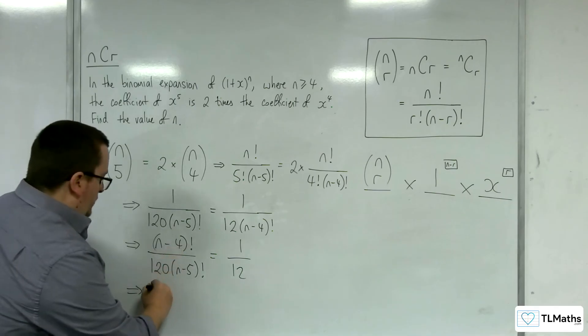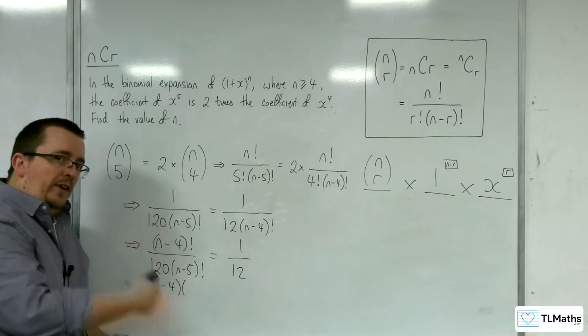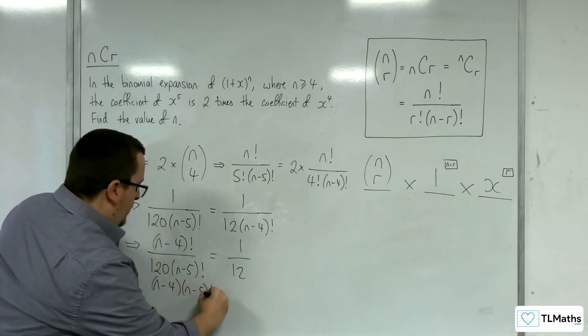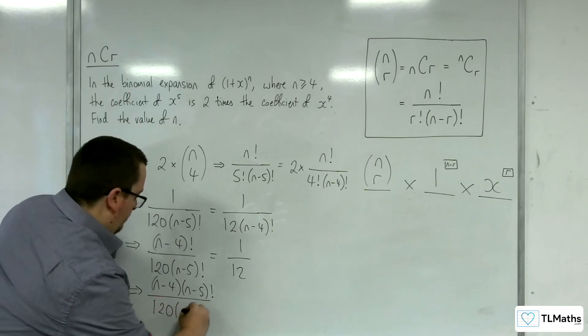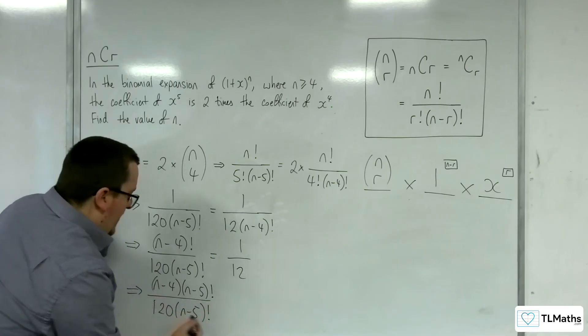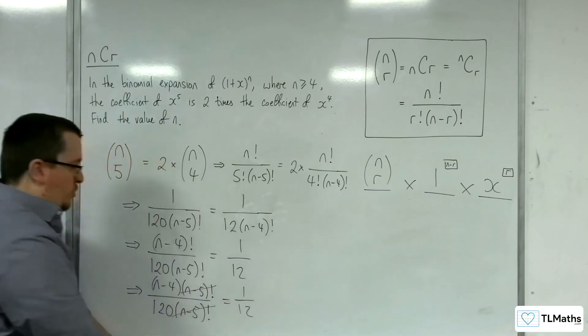So n take away 4 factorial is n take away 4 times n take away 5 times n take away 6, all the way down to 1. So that's n take away 4 times n take away 5 factorial. So now I can cancel the n take away 5 factorial, top and bottom of that fraction.